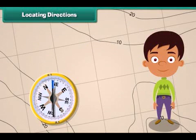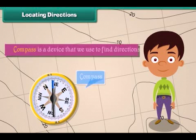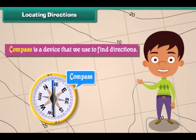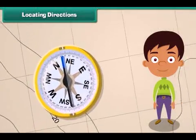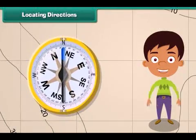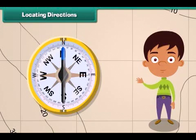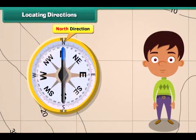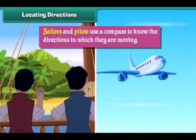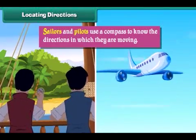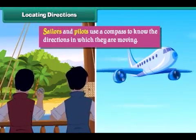A compass is a device that we use to find directions. A compass has a needle that rotates to indicate direction. The head of the needle always points towards north and the tail towards south. Sailors and pilots use a compass to know the directions in which they are moving.